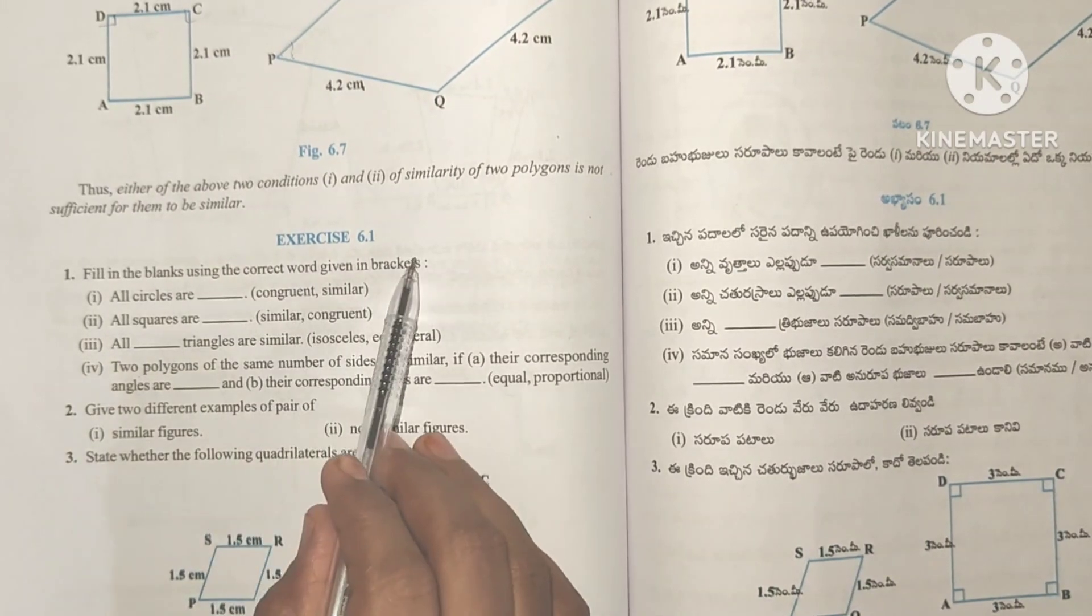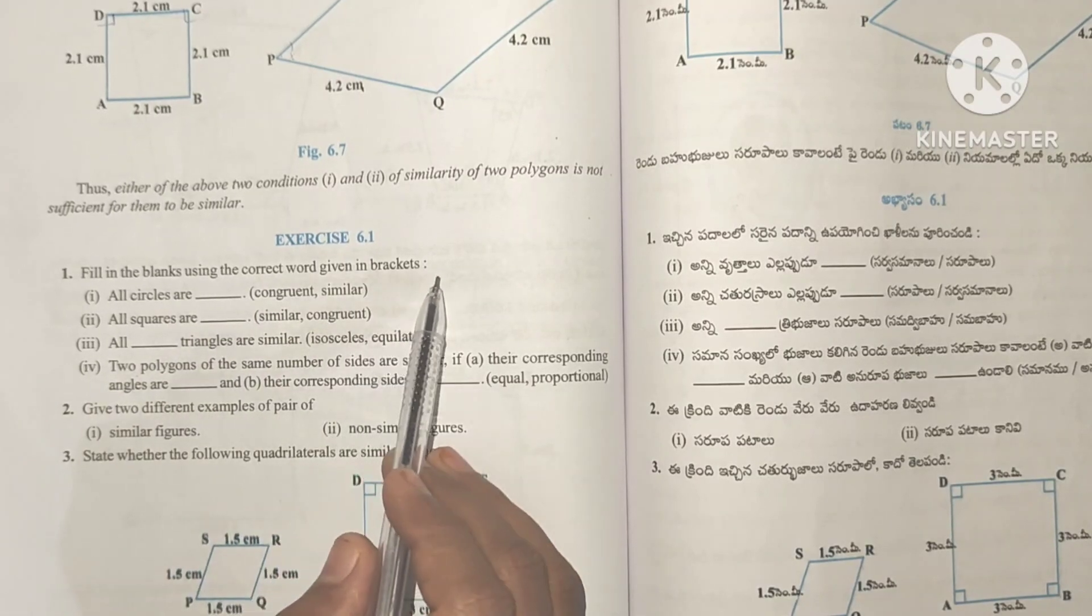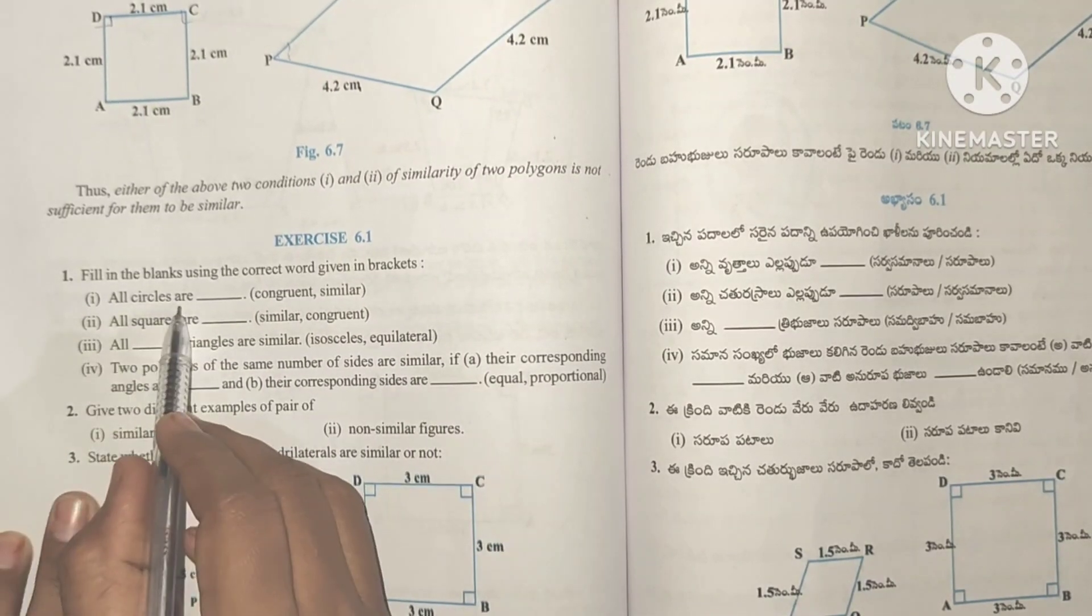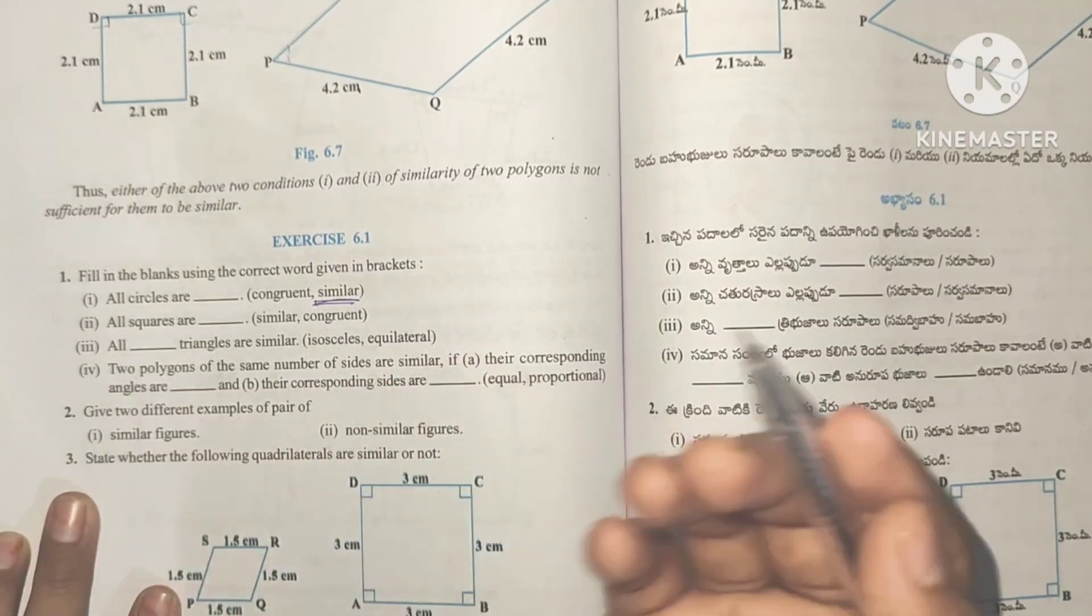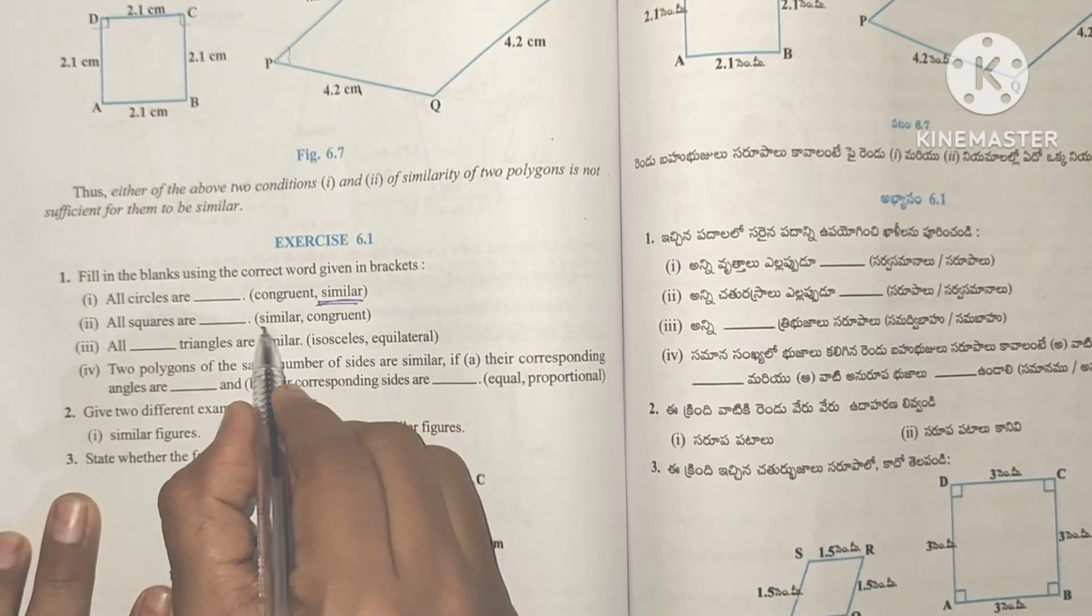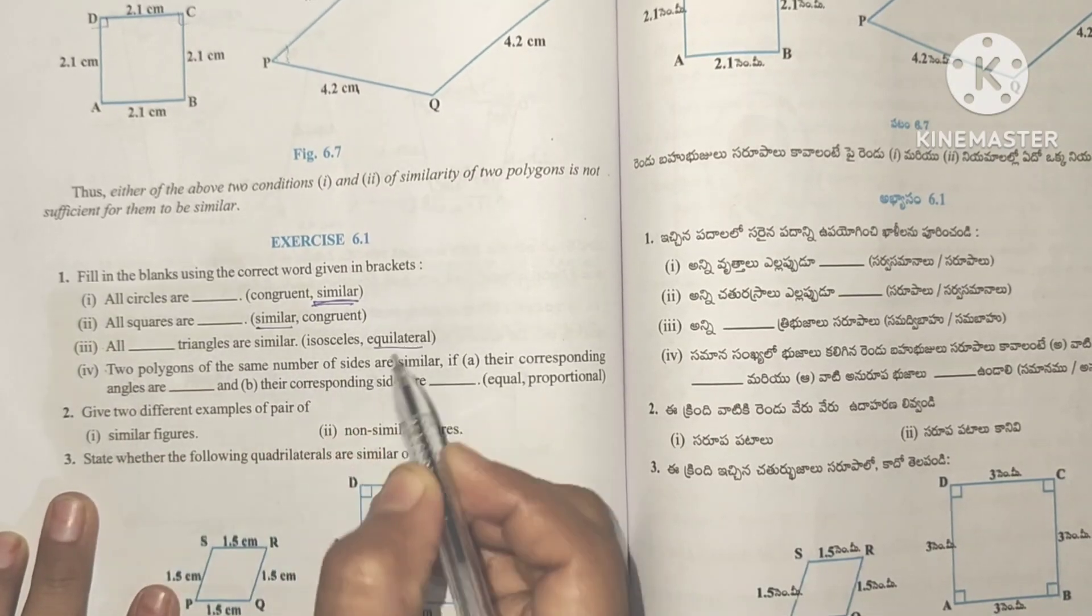So Exercise 6.1: Fill in the blanks using the correct word given in brackets. First one - all circles are similar. Same shape but not same size means similar. All squares are similar. All equilateral triangles are similar.